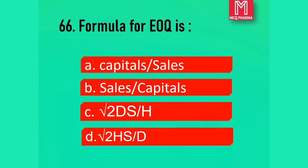Question number 66. Formula for EOQ is: Option A, Capital by sales. Option B, Sales by capital. Option C, Square root of 2DS by H. Option D, Square root of 2HS by D. Correct answer: Option C, Square root of 2DS by H.